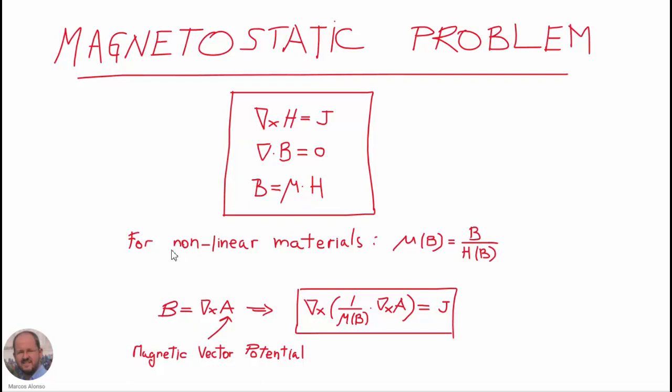The proportionality constant mu is the permeability of the material. For non-linear materials, mu can be represented as a function of the magnetic flux density. We also know that the magnetic flux density can be expressed as the curl of the magnetic vector potential, and using this expression we obtain the final equation that is solved by the program for magnetostatic problems.